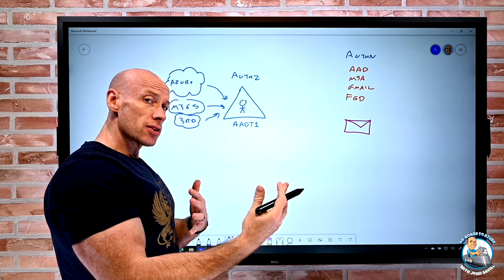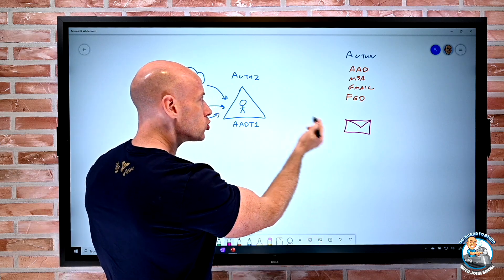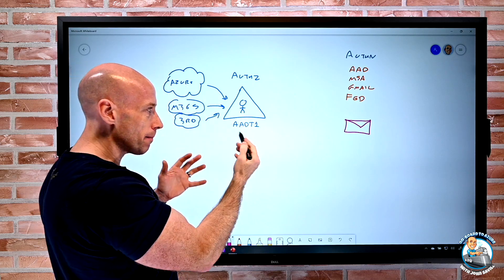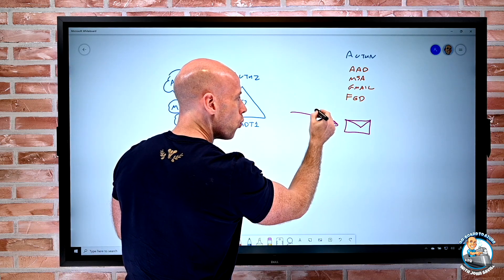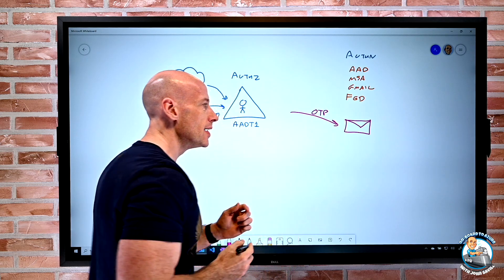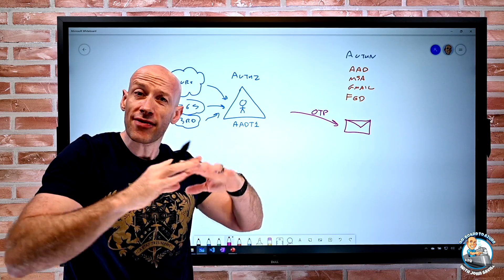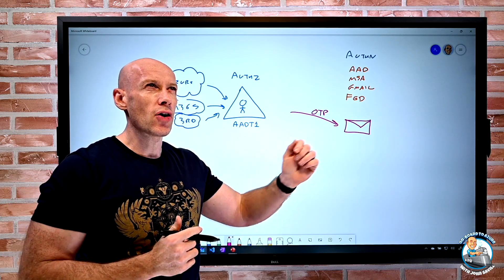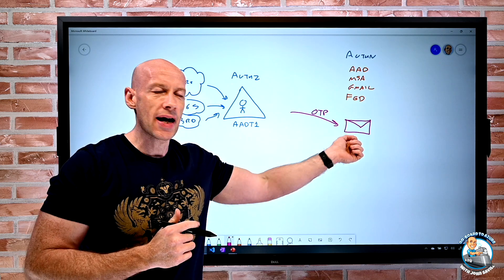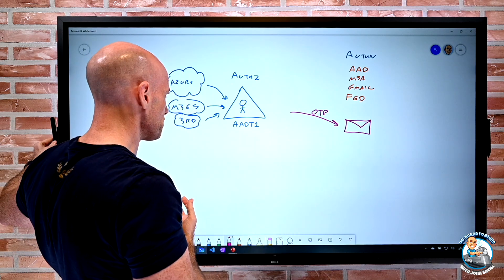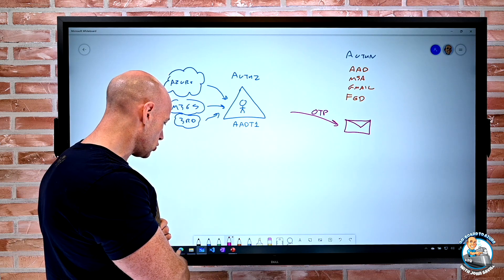So what a one-time passcode is, as you would expect, when they try to authenticate against my Azure AD to get access to something, they're going to get sent a one-time passcode to their mailbox, which proves they still have access to the mailbox. If they've left the company, you would assume they've lost access to the mailbox, so they wouldn't be able to receive the code anymore. And then they type that code in.